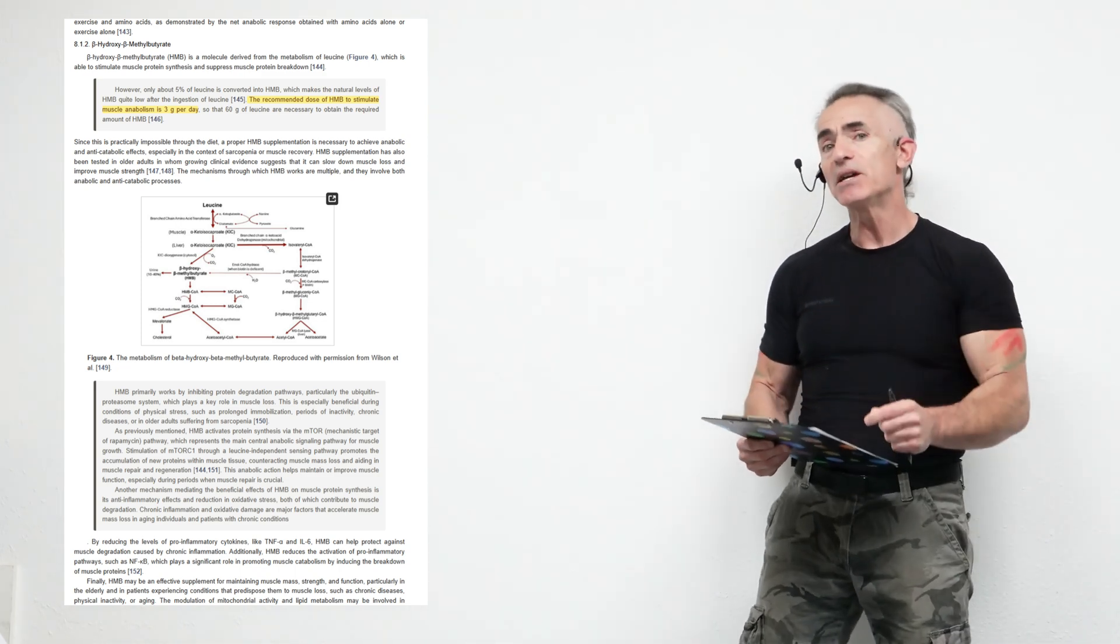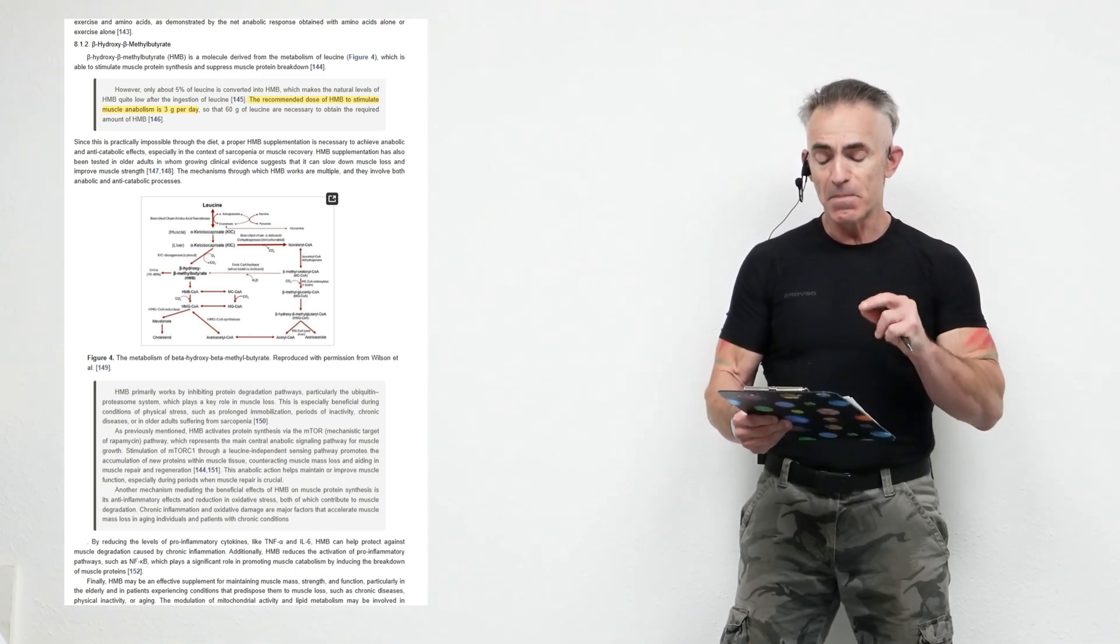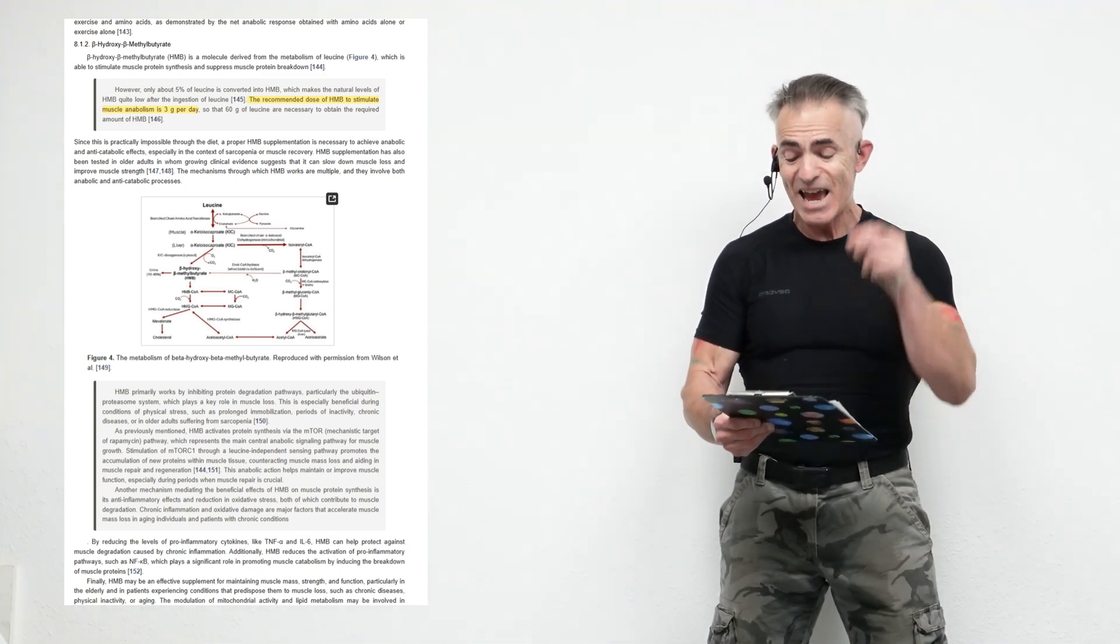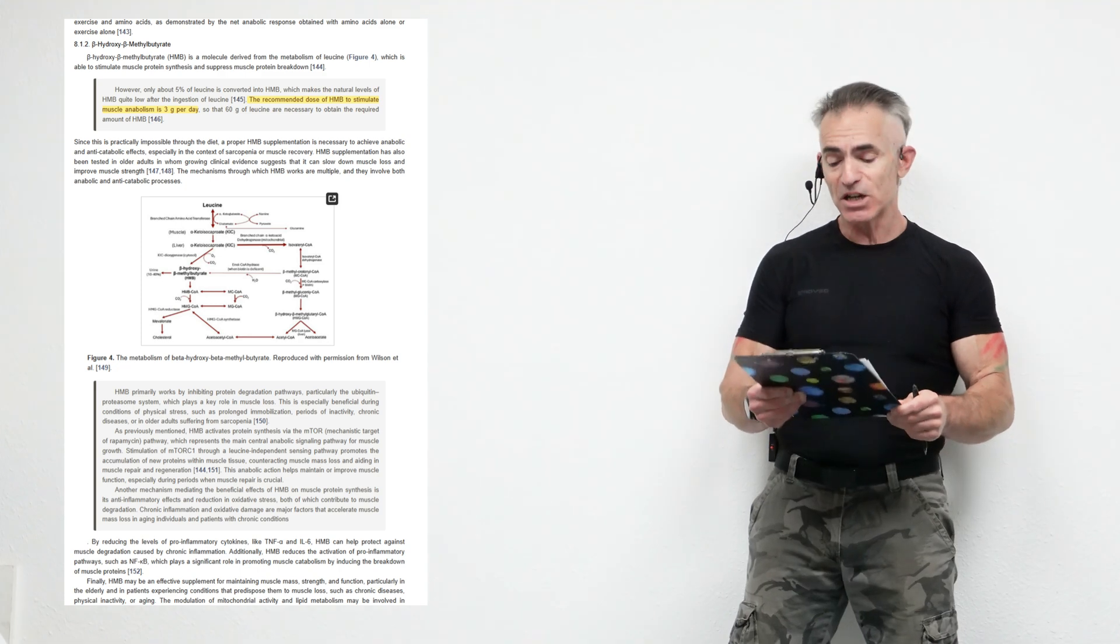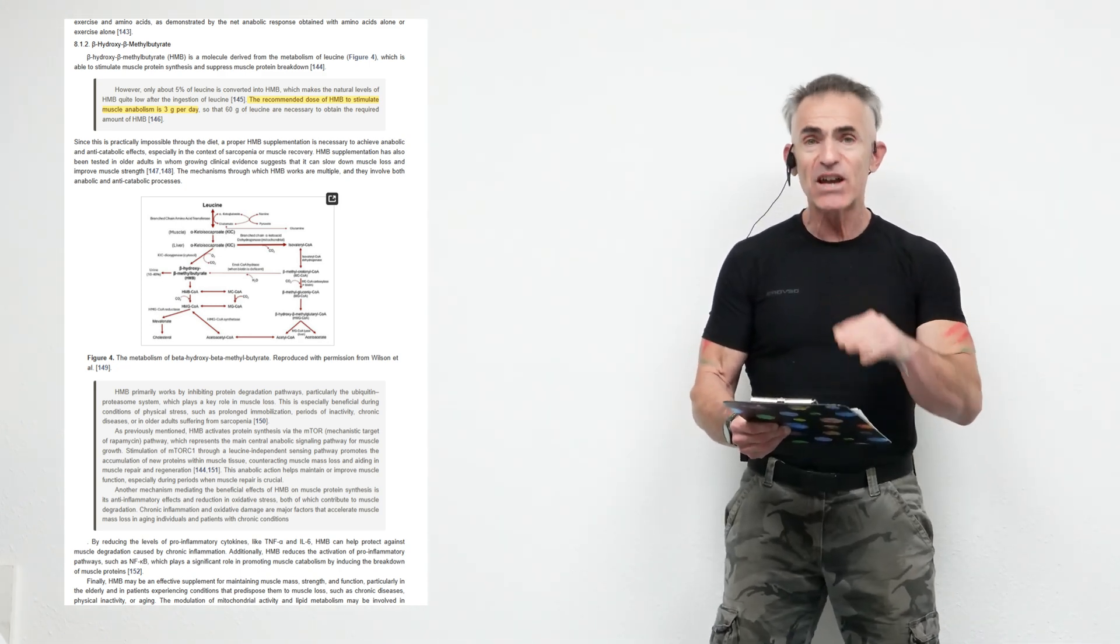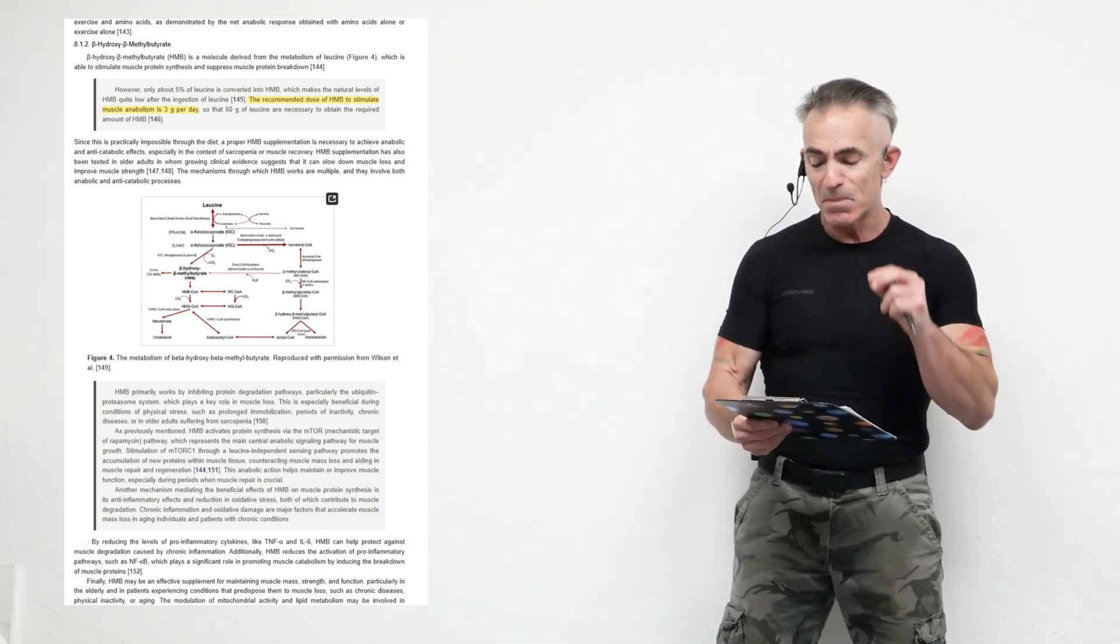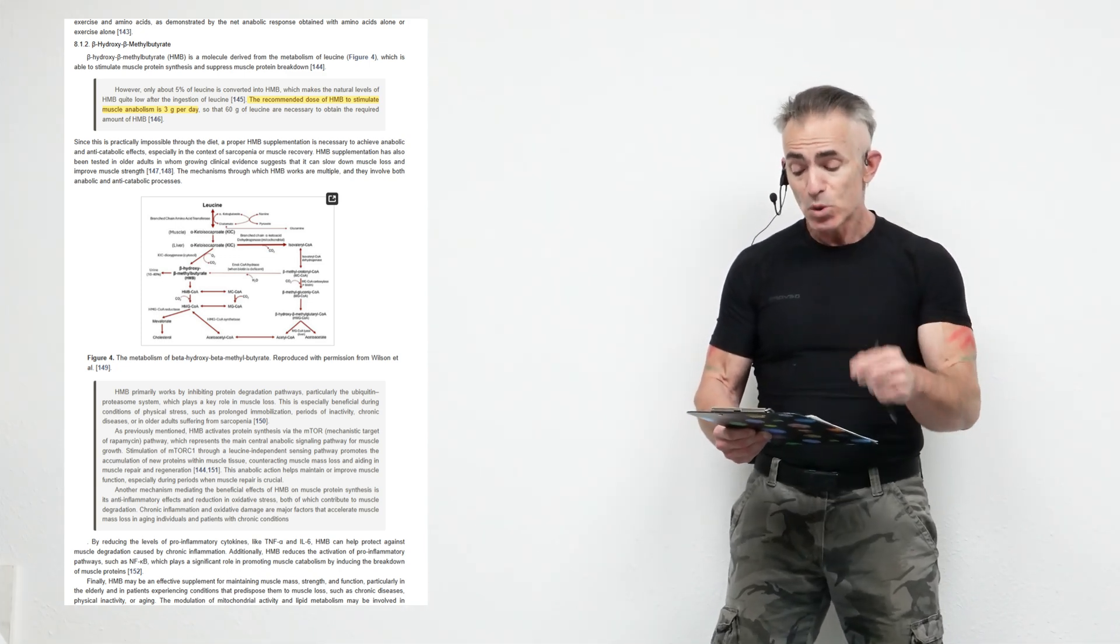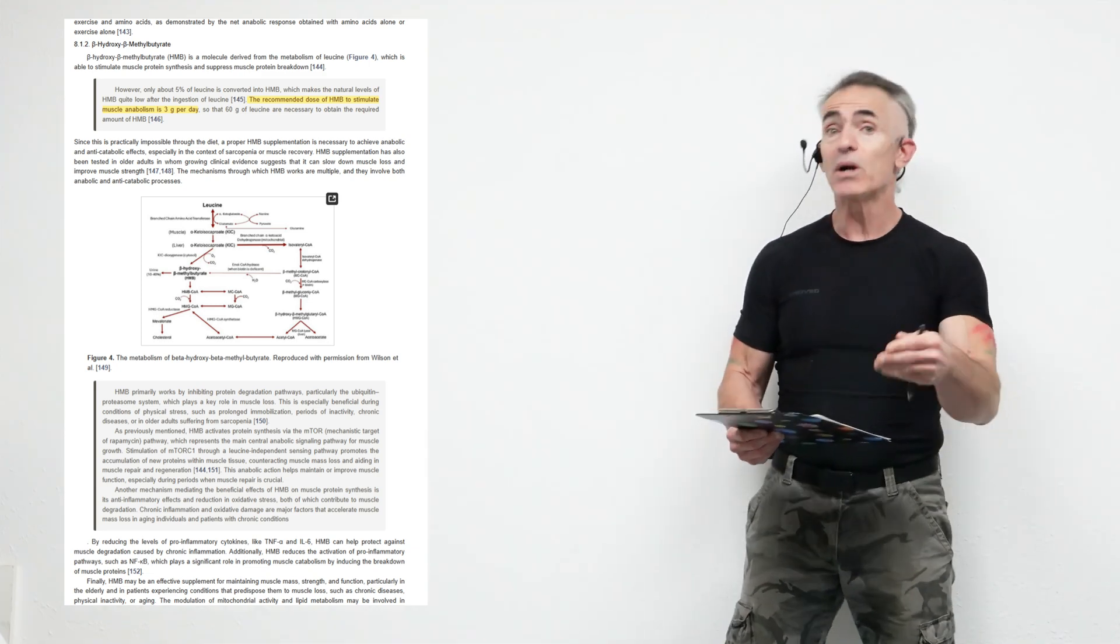HMB, the star here, the true star here. Beta-hydroxy-beta-methylbutyrate is a molecule derived from metabolism of leucine, which is able to stimulate muscle protein synthesis and suppress muscle protein breakdown. However, only about 5% of leucine is converted into HMB, which makes the natural levels of HMB quite low after the ingestion of leucine. The recommended dose of HMB to stimulate muscle anabolism is 3 grams per day, so 60 grams of leucine are necessary to obtain the required amount of HMB. So a lot of people are going to supplement directly with HMB.